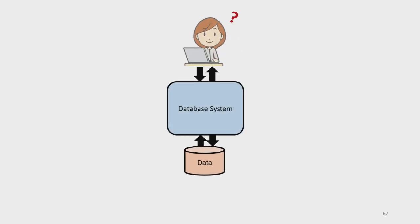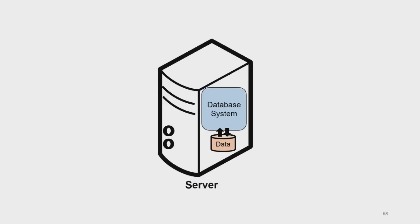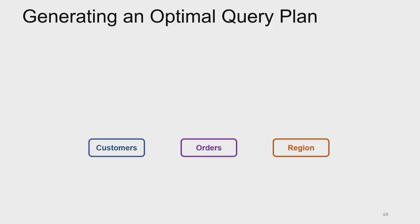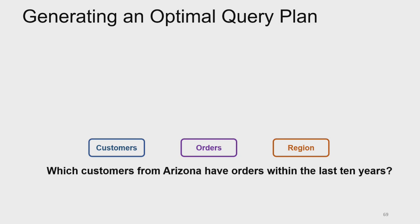Generally, whenever we have questions about our data, we rely on database systems to help answer them — storing, maintaining, and managing data. But these systems are constrained by allocated resources, so the database system must come up with an optimal query plan. Think of this query plan as a program that efficiently fetches data and runs computations before providing the final result. For example, say we have three relations — customers, orders, and regions — and a query fetching all customers from Arizona with orders within the last 10 years. We need to join across all three relations.